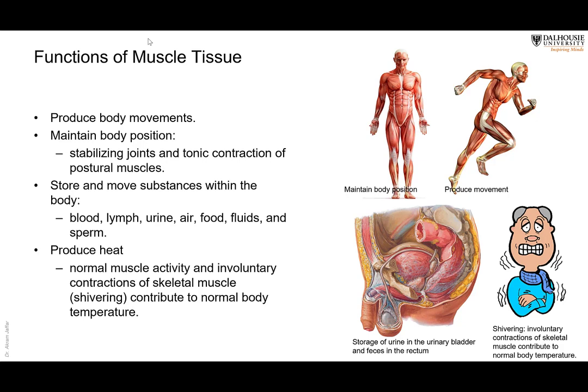Muscles also produce heat — that's why we warm up at the gym. They have a good blood supply and a lot of mitochondria that produce heat, which is transmitted by the blood to the entire body. In cold weather, we shiver — shivering is an involuntary muscle contraction to produce extra heat. Newborns don't shiver; instead, they have brown adipose tissue with good blood supply and many mitochondria to generate heat. As we grow up, we lose this brown adipose tissue and rely on shivering.